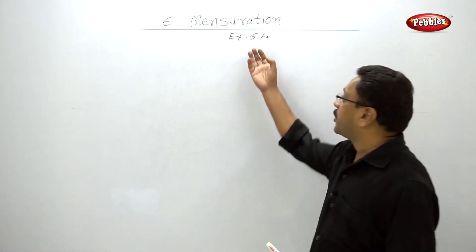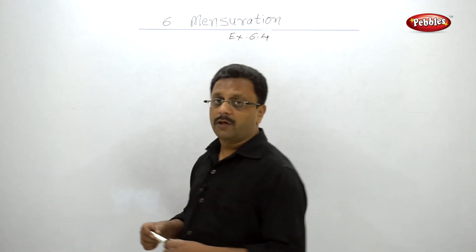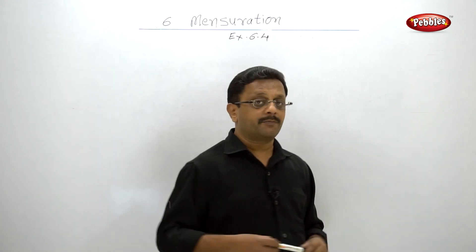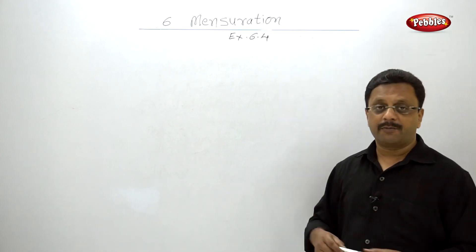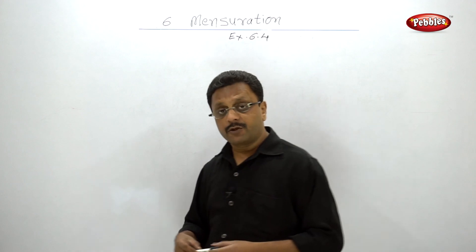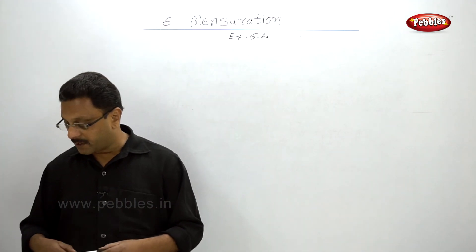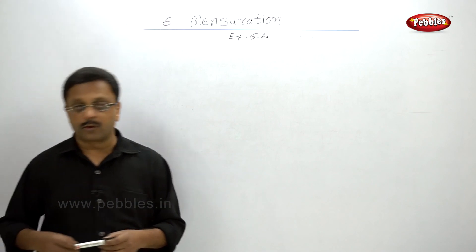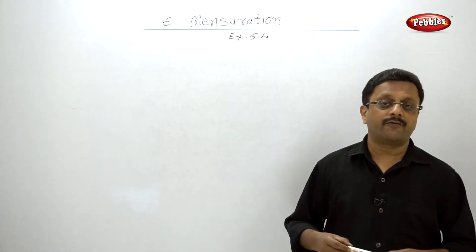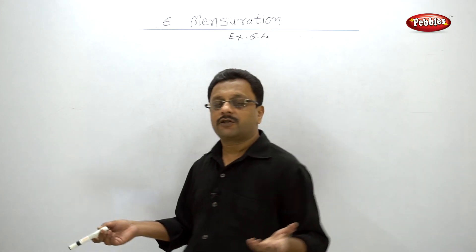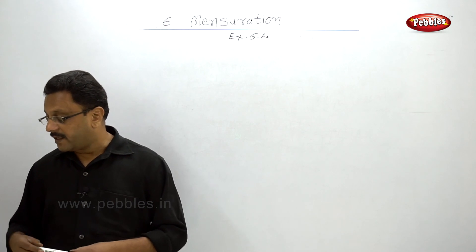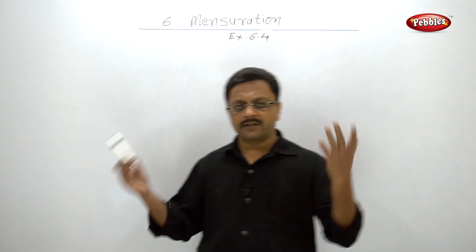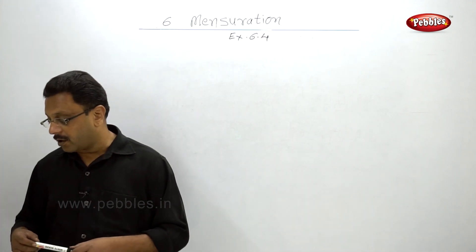Welcome back. We are going to solve Exercise 6.4, but I'm not going to solve each and every example — only the tricky, special, or different types on the board. If it's direct substitution of a formula, I'm not going to solve that. The first example — dimensions of a cuboid in centimeters as 16×14×20, find its total surface area — is very simple; you know the formula. Second: side of a cube is 60 cm, find total surface area — very simple again.